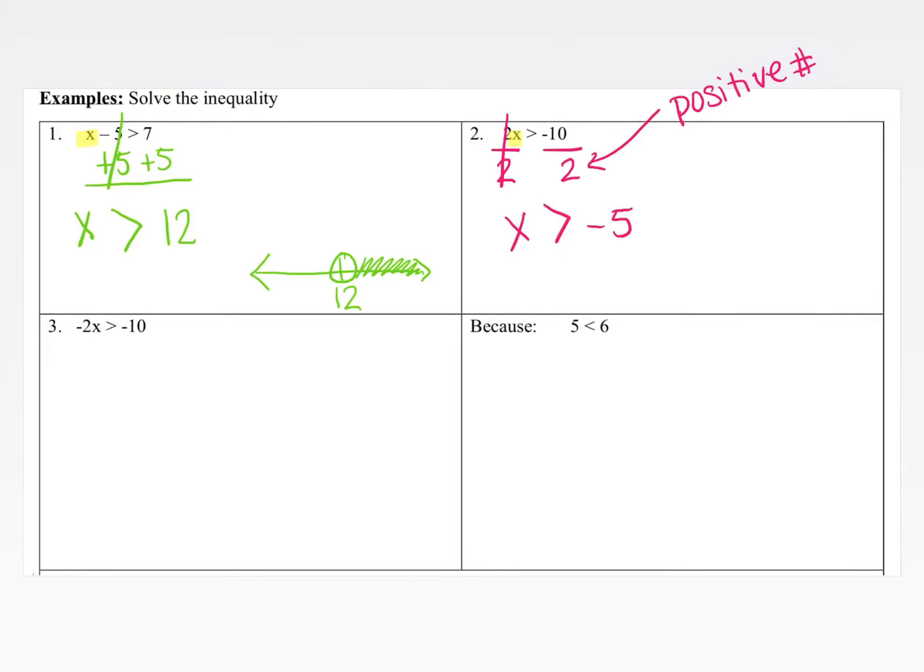Oftentimes students get a little stuck because they see that their value, once they simplified, negative 10 divided by 2 in this case, gave them a negative number, so they think that they actually have to change their inequality. Nope, it all relates to the number that you multiply or divide by. In this case it was positive, so we don't need to change anything.